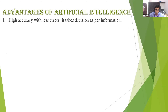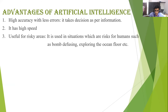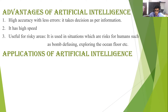Advantages of AI: when we give a task to an artificial intelligence machine, it can complete it with high speed and high accuracy with fewer errors. These machines are also used in risky areas such as bomb diffusing and exploring the ocean floor, which are very dangerous for humans. Applications of AI include natural language processing, manufacturing of robots, and gaming.